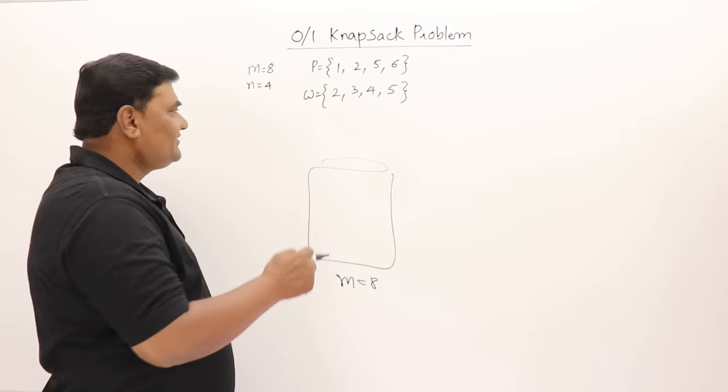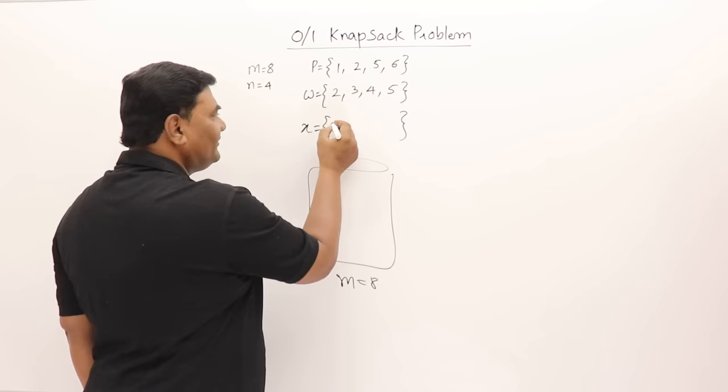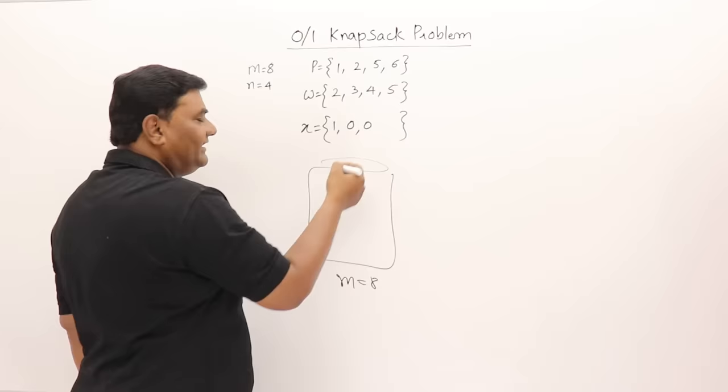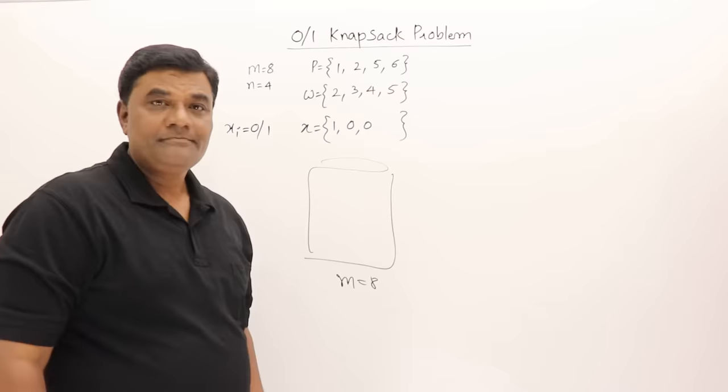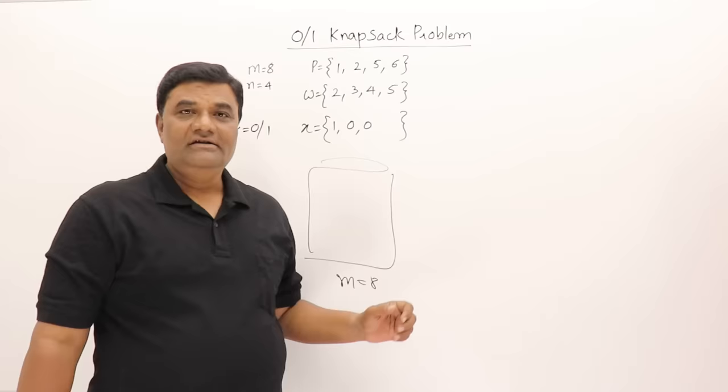I have to write down which objects are included and not included. So I can write each X_i as either 0 or 1 — the values can be 0 or 1 but not a fraction. This means the objects I am going to carry are not divisible.